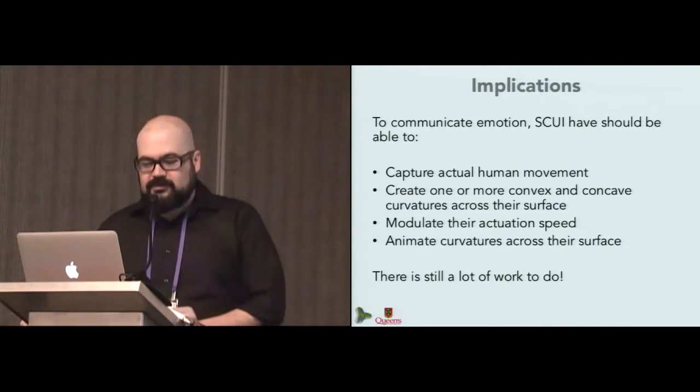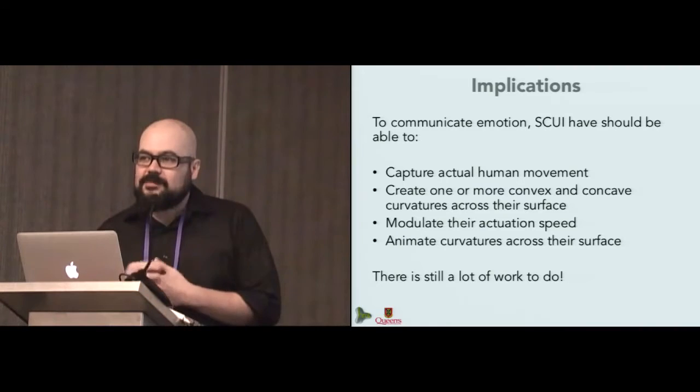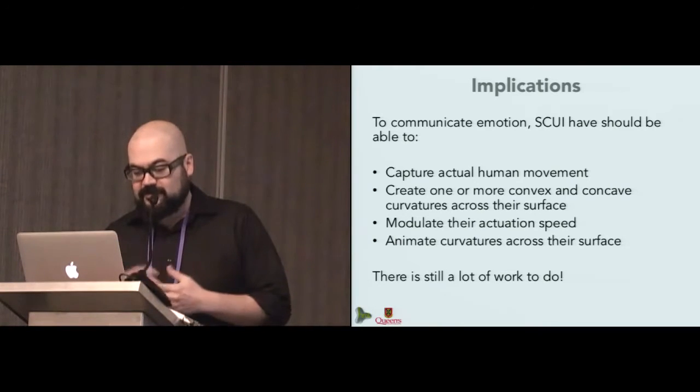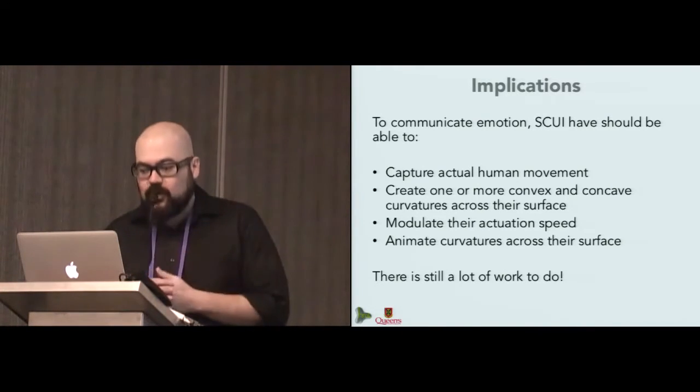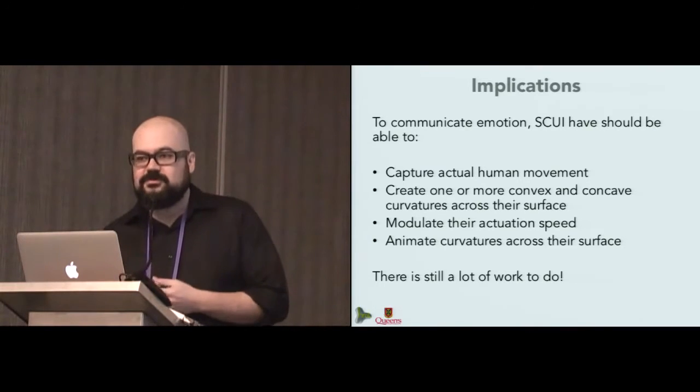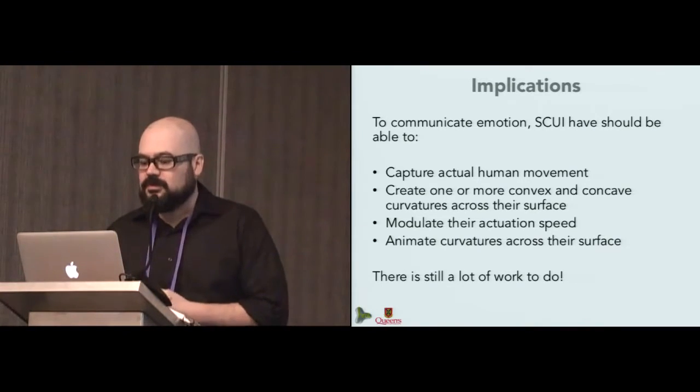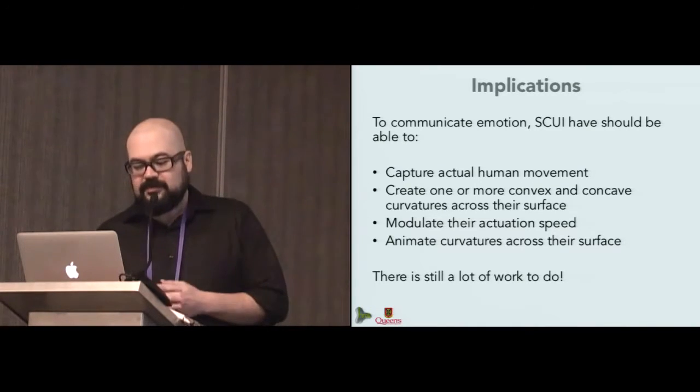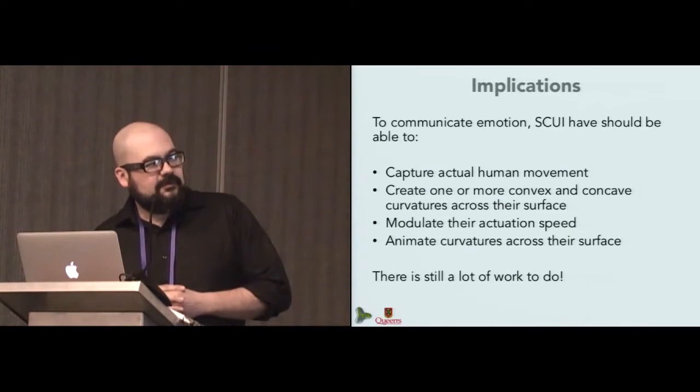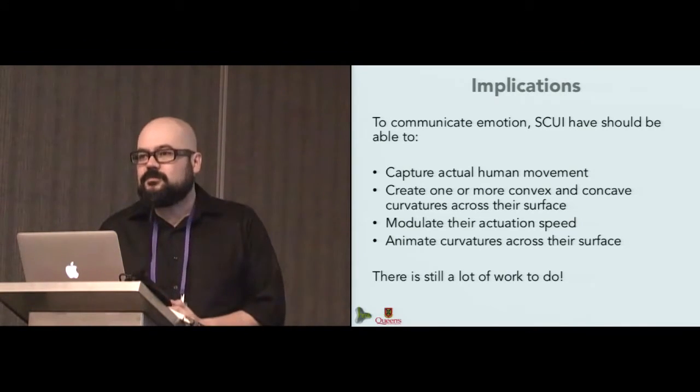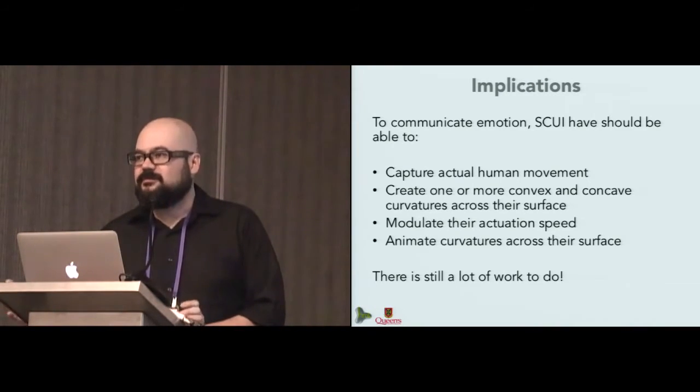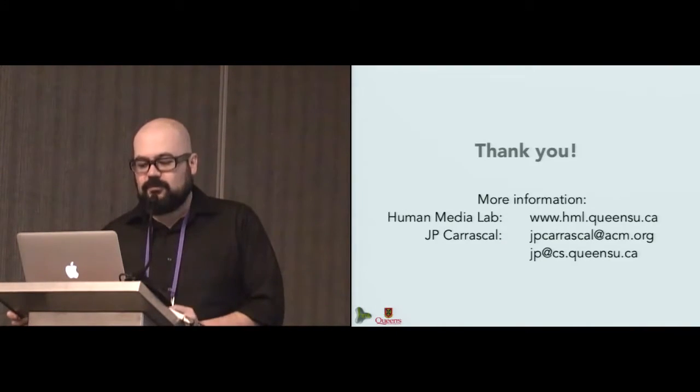The implications from our study are that it's very important to capture the actual emotion and not to try to generate movement from abstract data. It's important to have one or more convex and concave curvature across the surface of a shape changing mobile phone to fully capture the possibilities of expression of emotion. It's very important to modulate the motion, to modulate the actuation speed and to animate curvatures across the surface of the motion. And we think that we have shown the potential for expressing emotion with self-actuated shape changing interfaces, but there's still a lot of work to do.